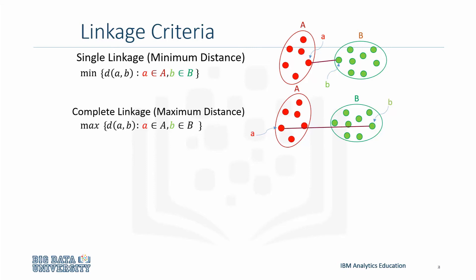The third type of linkage is average linkage clustering, or the mean distance. This means we're looking at the average distance from each point from one cluster to every point in another cluster.